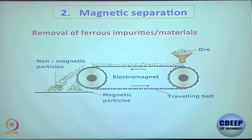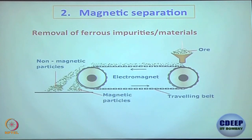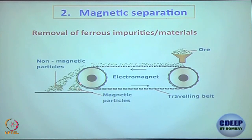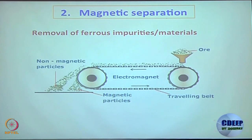Another technique you often need to use is electromagnetic separation. You pass the ore through an electromagnet; depending on the nature of the materials, those which have magnetic attraction will be isolated separately from the non-magnetic material. These are very easy techniques and easy to understand.